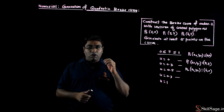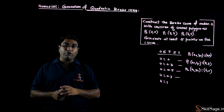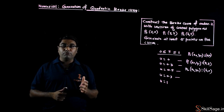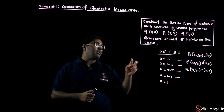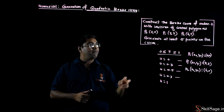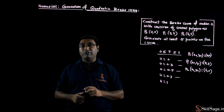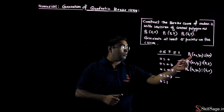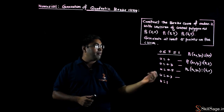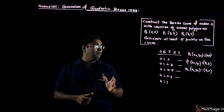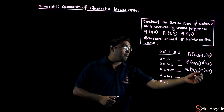Quadratic Bezier curve को rasterize करने के लिए total तीन control points होनी चाहिए: P0, P1, P2। यहाँ पर order 2 quadratic Bezier को rasterize करने के लिए तीन control points दिए हैं: P0 = (0,0), P1 = (3,3), P2 = (6,0)। तो X0=0, Y0=0; X1=3, Y1=3; X2=6, Y2=0।